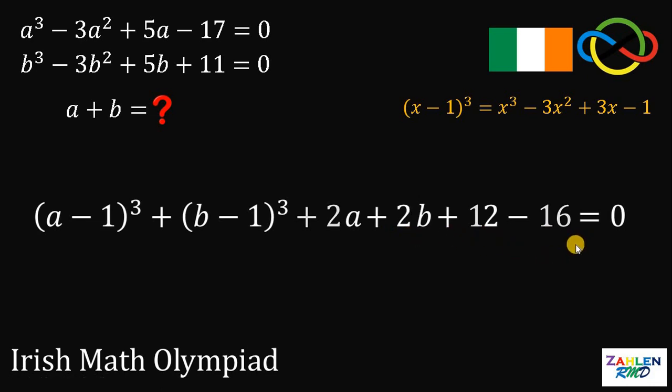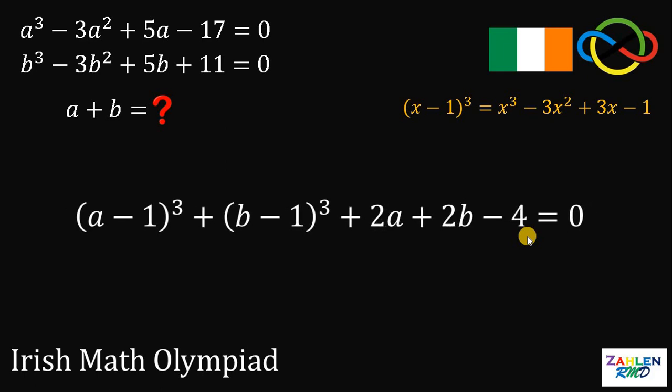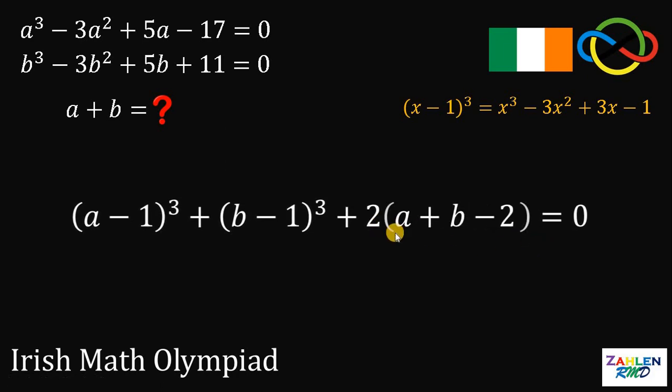We have A minus 1 cubed plus B minus 1 cubed plus 2A plus 2B plus 12 minus 16. Now, 12 minus 16 is just negative 4. I see something beautiful. So what we're going to do is to factor out 2 on 2A, 2B, and negative 4. If we do that, we get 2 times the quantity A plus B minus 2.